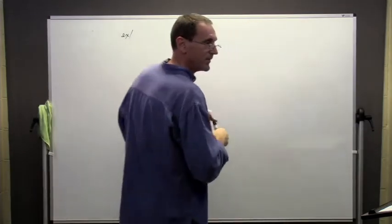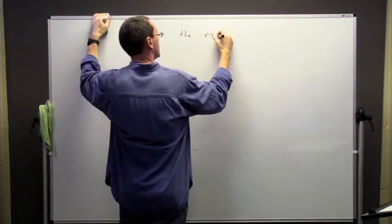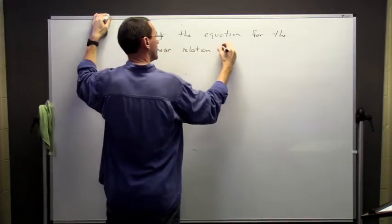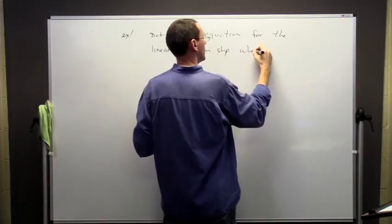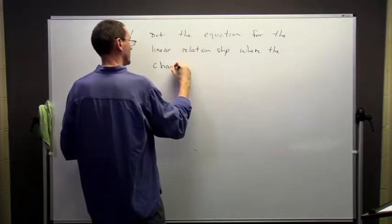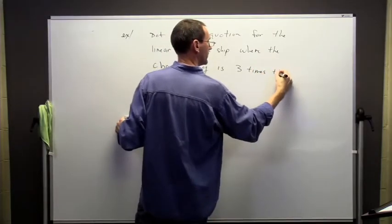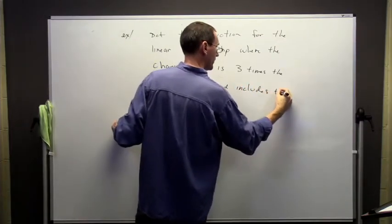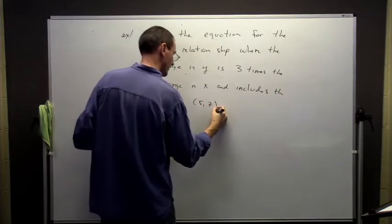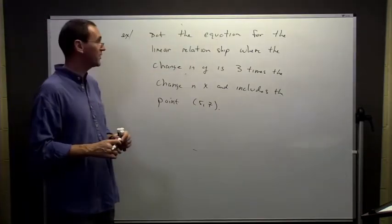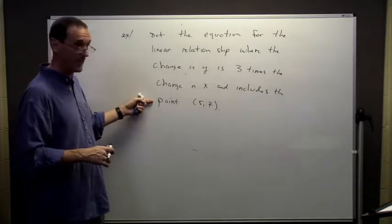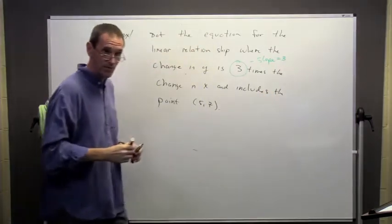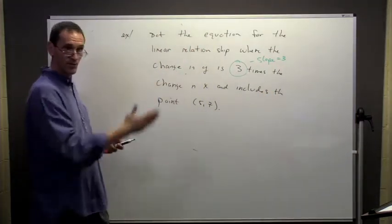For this example, we're going to try to determine the equation for the linear relationship, where the change in y is 3 times the change in x, and includes the point 0.57. So this is basically the slope. Since it's positive, that means if I were to graph it, it's going to be increasing to the right, rising to the right.